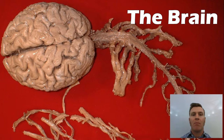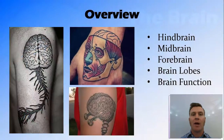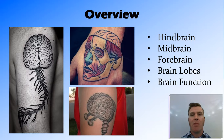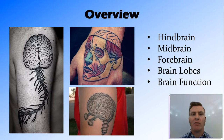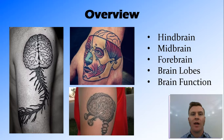In this video, we're going to look at the brain — the structure and function of the brain — including the three different parts: the hindbrain, midbrain, and forebrain. We'll then look at the four different lobes of the brain and talk about different brain functions that occur in those different lobes, with an emphasis on the areas that are used for communication.